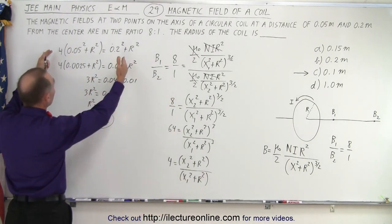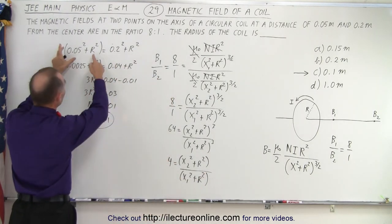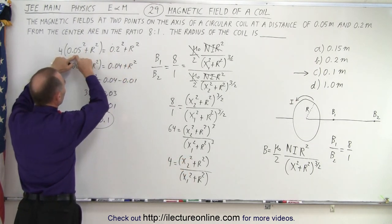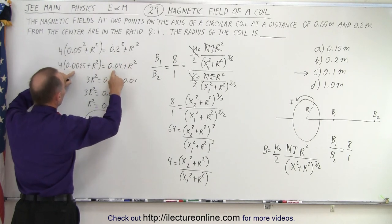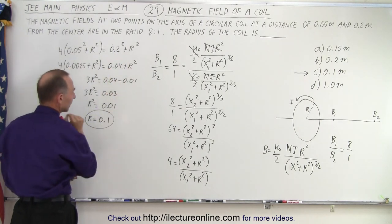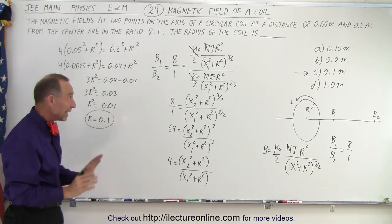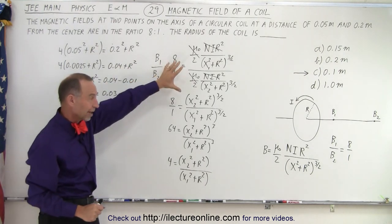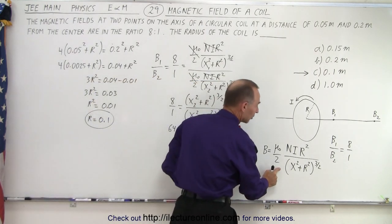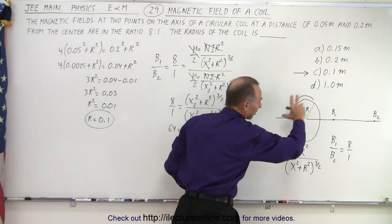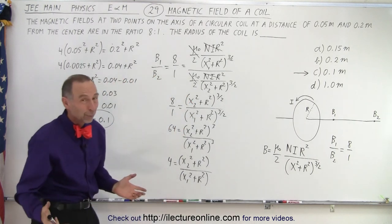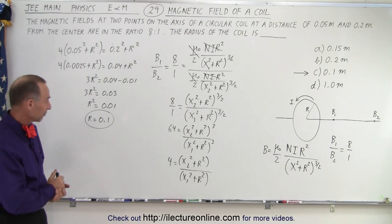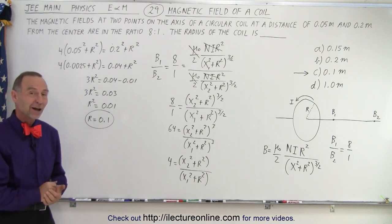Then you can cross multiply, substitute what's in for the x's, the short distance and the longer distance, square it, then you solve algebraically and we get this. Again it's a relatively easy problem, it's simply solving a ratio, a lot of things cancel out, but you have to remember this equation and you have to be able to visualize the problem the way it's written. So if you know the equation and you can visualize the problem, it can be done fairly quickly and that is how it's done.